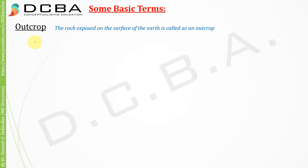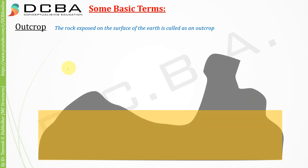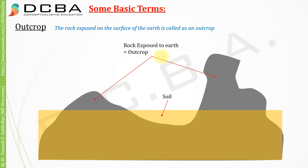The first terminology is outcrop. What does outcrop mean? The rock which is exposed on the surface of the earth is called an outcrop. Let's say this is soil and the rock is not only on top of the soil but also underneath it. The rock which is exposed outside is called an outcrop, and the rock inside is different.